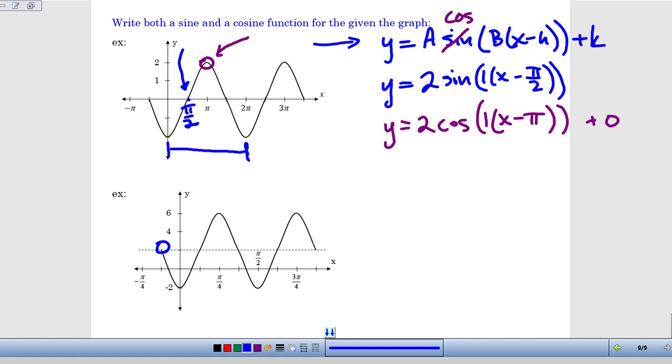Now for starters, we can see that there is a k value in this one. Our graph has been translated up 2 units. If we look there, we can see we're counting by 2s along the y-axis. So I'm going to have a plus 2 hanging out in that k position.